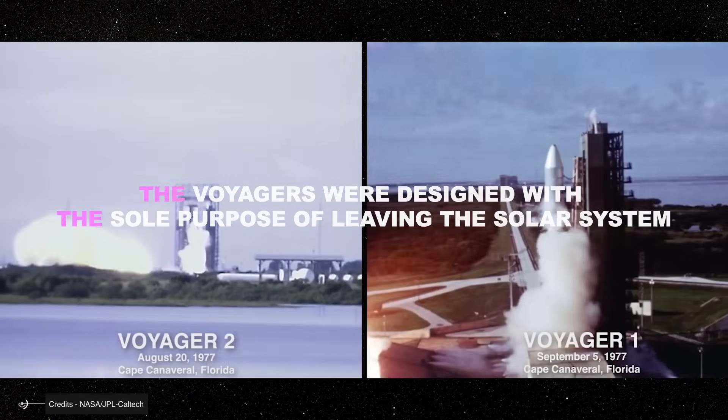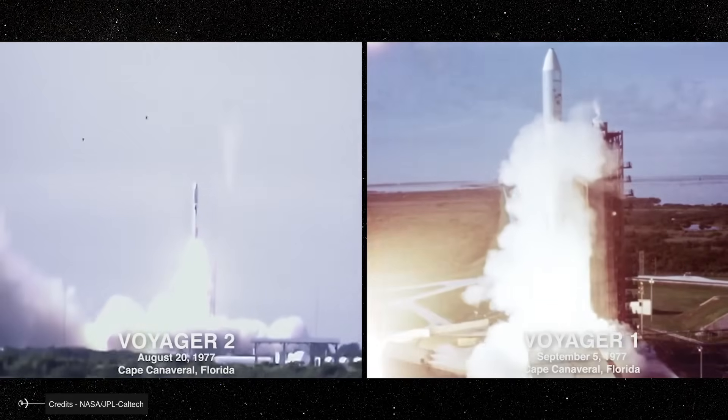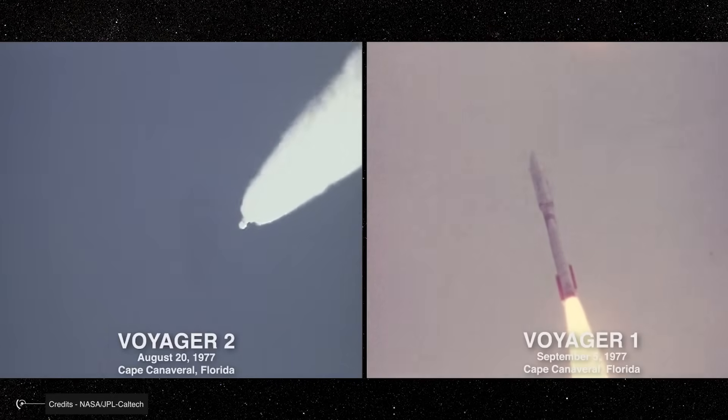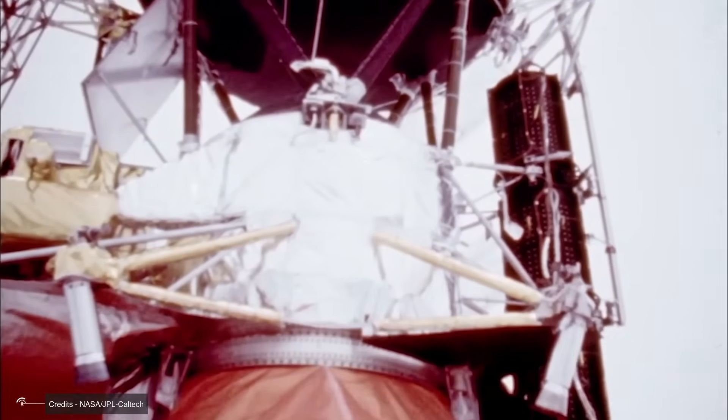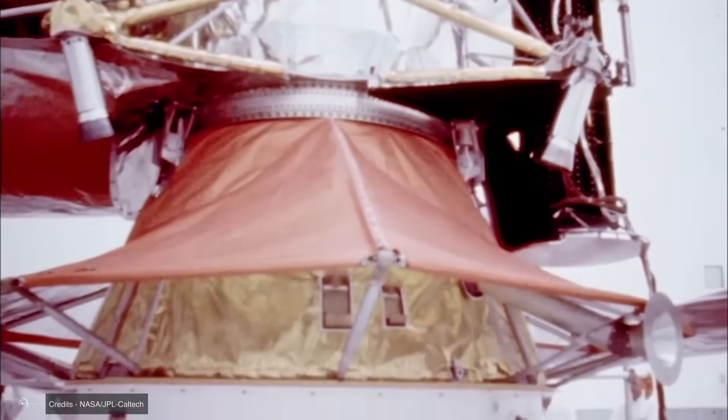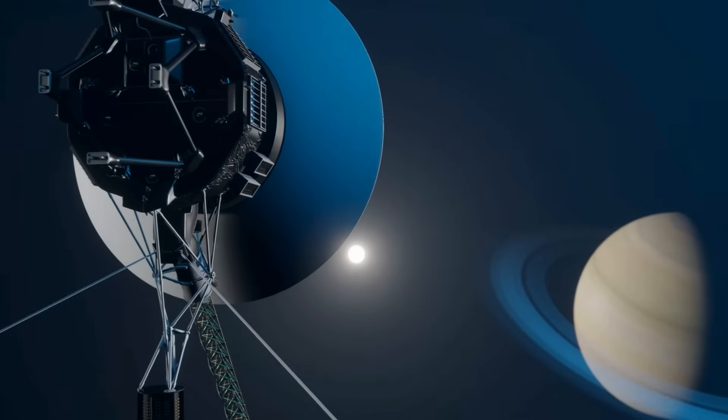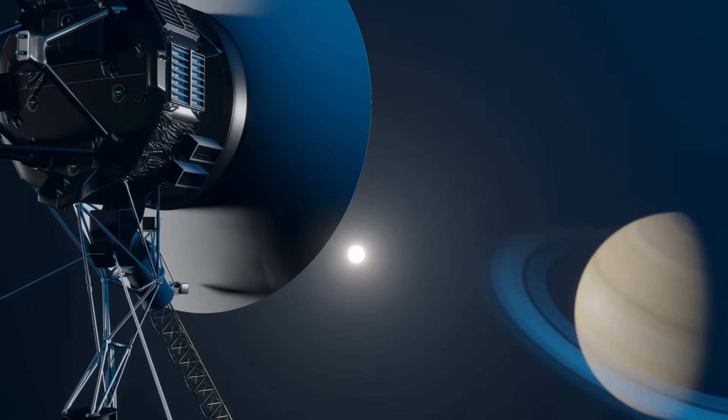The Voyagers were designed with the sole purpose of leaving the solar system. This statement sounds epic, but it's not entirely true. When the Voyager 1 and Voyager 2 probes were launched in 1977, their primary mission wasn't to travel to interstellar space, but to explore the outer planets of the solar system. In fact, their design and programming were geared toward taking advantage of a rare planetary alignment that occurs only once every 176 years.